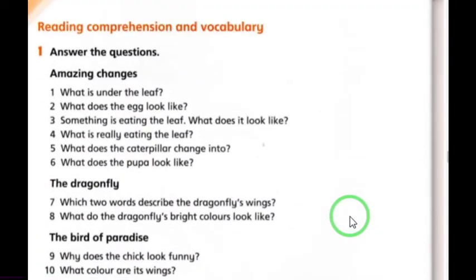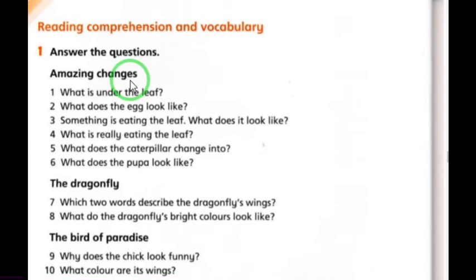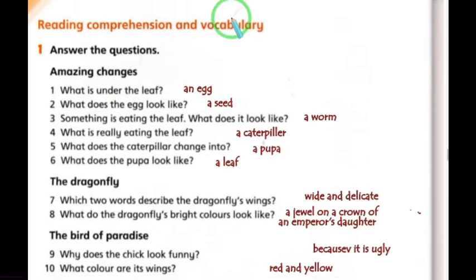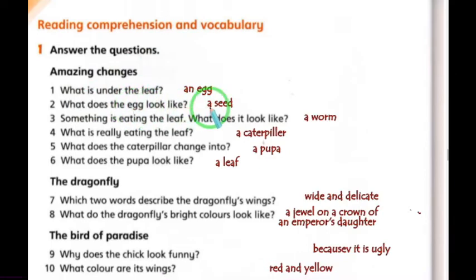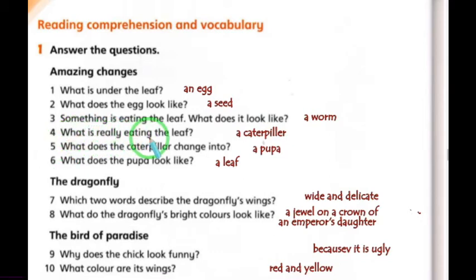We'll start with the reading comprehension and vocabulary questions — 'Amazing Changes.' What is under the leaf? It's an egg. What does the egg look like? It looks like a seed. Something is eating the leaf — what does it look like? It looks like a worm. What is really eating the leaf?